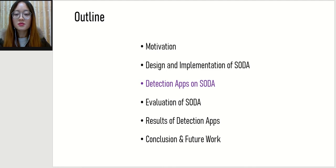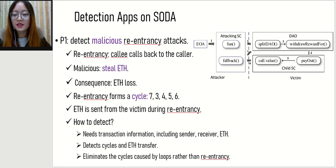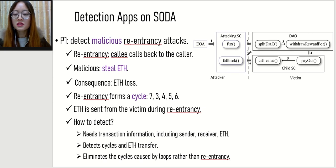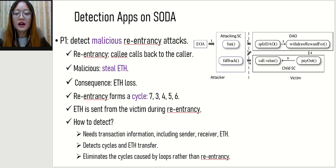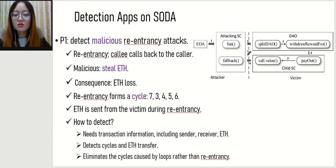I will now introduce the 8 detection apps implemented on SODA. The first app detects malicious re-entrancy attacks. Re-entrancy means the call goes back to the caller in the same external transaction. We consider a re-entrancy malicious if ETH is stolen. This figure illustrates the practical re-entrancy attack which steals ETH from the DAO: ETH is stolen from the DAO to the attacker, and steps 3-4-5-6 form a cycle. This app needs transaction information including sender, receiver, and ETH details, and it eliminates cycles caused by loops rather than re-entrancy to reduce false positives.